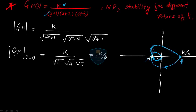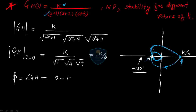You also need the magnitude at the point where the plot crosses −180°. This is not at infinite ω; it is the point where your plot is crossing −180°. To calculate this point, you find the phase of G(s)H(s): angle = −tan⁻¹(ω) − tan⁻¹(ω/2) − tan⁻¹(ω/3), and you compare this with −180°.